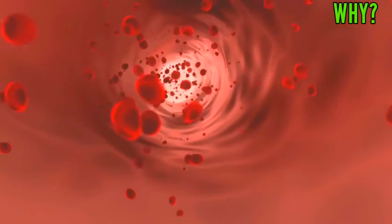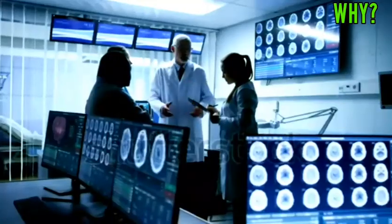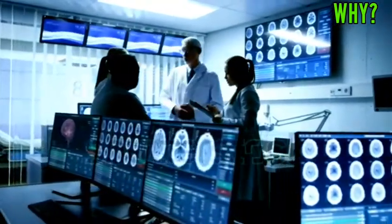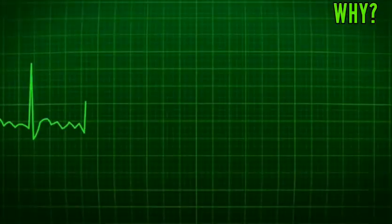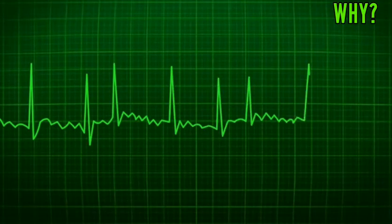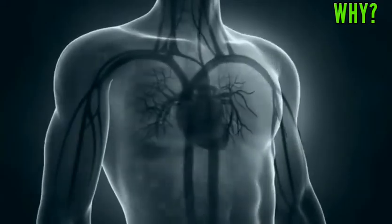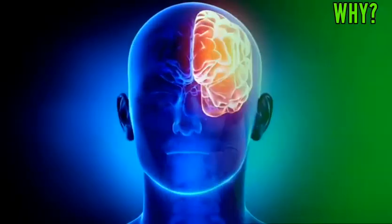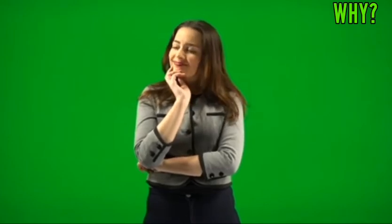When the blood becomes thick, the flow of blood becomes very slow, due to which blood does not reach all parts of the body. This causes all the main organs of the body to stop working—like the heart, lungs, brain, etc.—and then the person dies. So now you must have understood why a person dies due to electric shock.